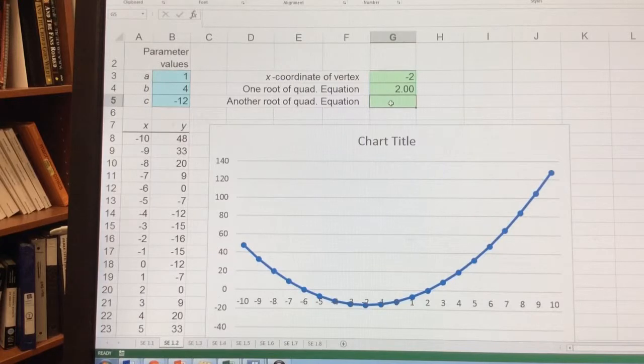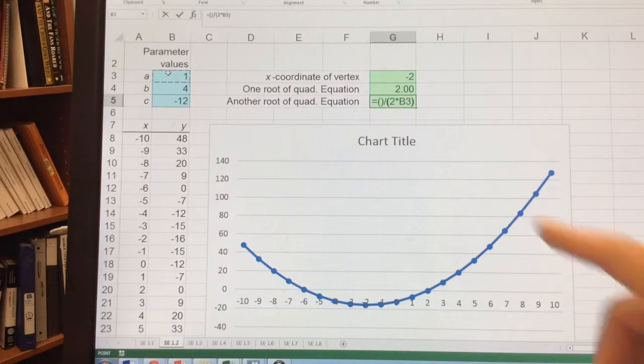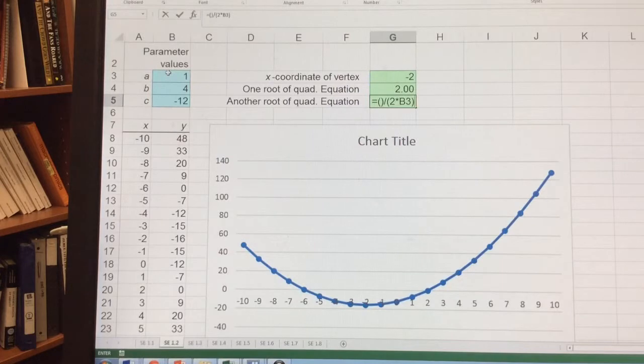The next one I need to do is negative b minus the square root. Okay, so I'm going to start with everything is divided by 2 times a. I should do an equal sign to get that. And make sure you have to have everything divided by, so you make sure everything is in parenthesis and 2a is under there. And now I have negative b minus the square root of b squared minus 4 times a times c.